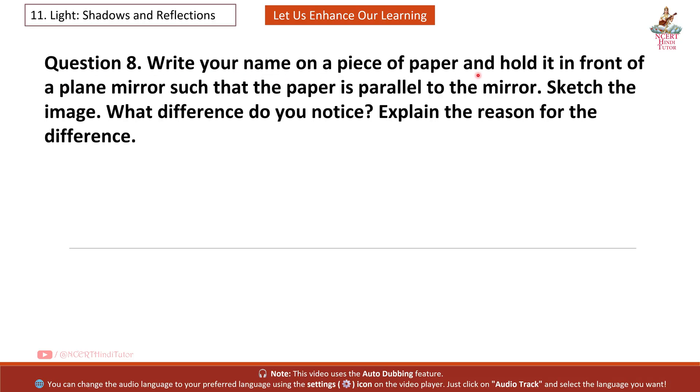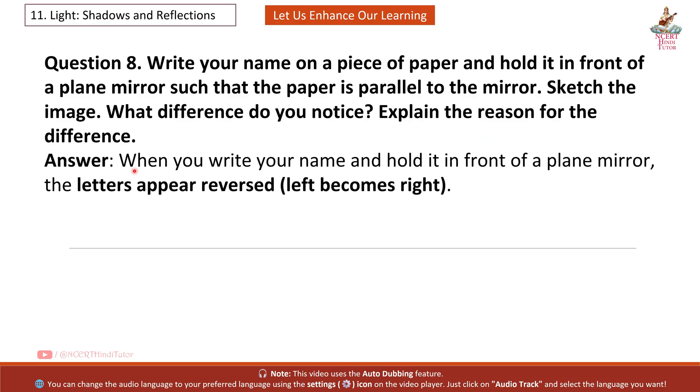Question 8: Write your name on a piece of paper and hold it in front of a plain mirror such that the paper is parallel to the mirror. Sketch the image. What difference do you notice? Explain the reason for the difference. Answer: When you write your name and hold it in front of a plain mirror, the letters appear reversed. Left becomes right. This is due to lateral inversion.